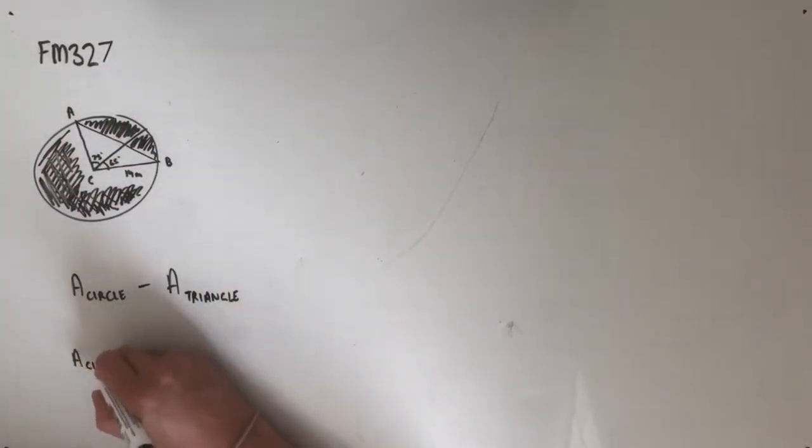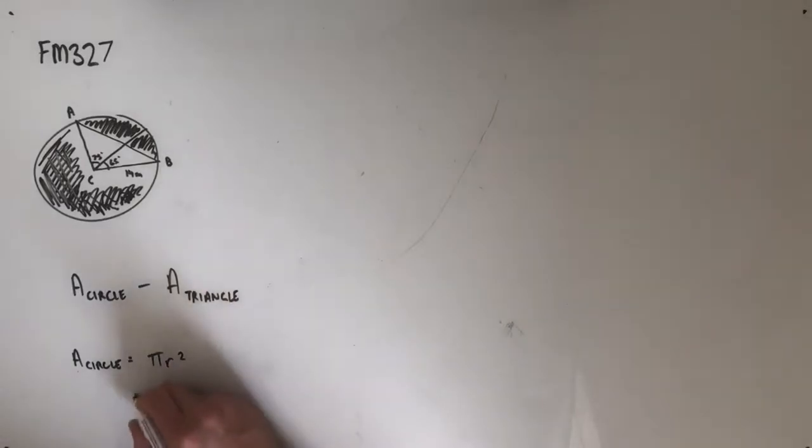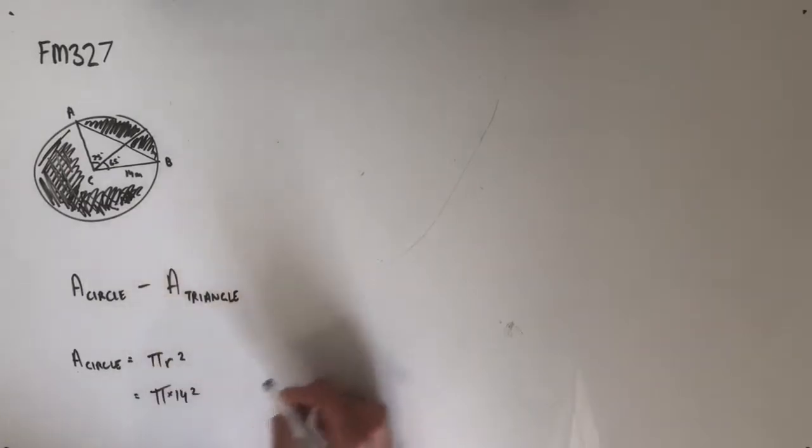Starting with the area of the circle. The area of our circle, we're going to use the formula pi r squared, which the radius of this circle is 14 meters, so it's just going to be pi times 14 squared.